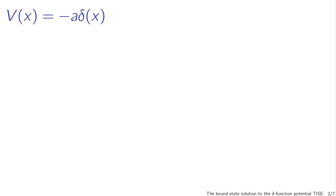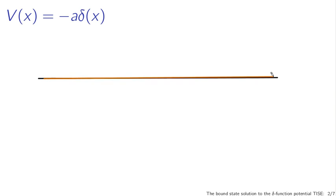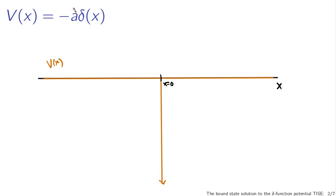What we're working with is a delta function potential, V of x. It's zero everywhere except at a specific point — at the origin, x equals zero — and there it goes to negative infinity. I'm defining V of x to be minus α times delta of x, because we don't necessarily know exactly what the strength of this delta function potential is. So we need some constant here which determines the strength of the potential relative to a unit normalized potential.